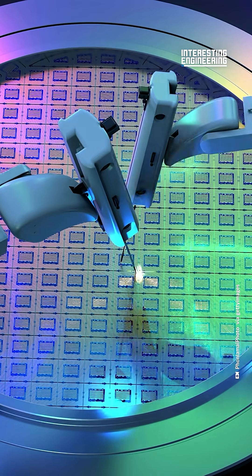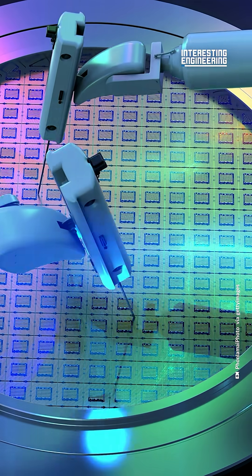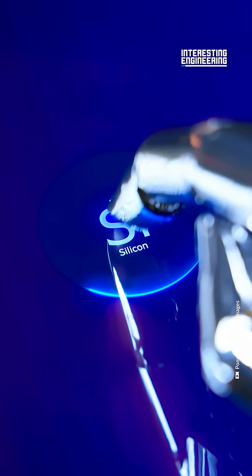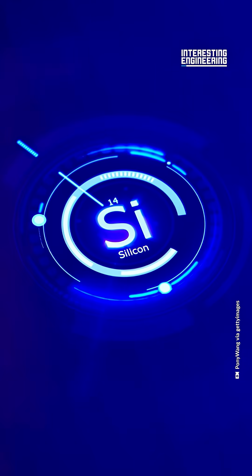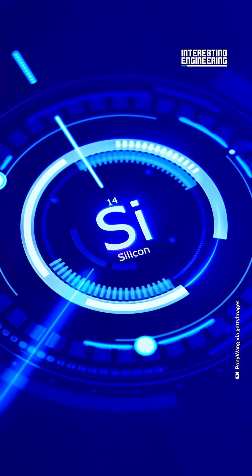Not a single piece of technology would work without this chemical element. Meet silicon. It's used in construction, medicine, kitchenware, automobiles, hygiene, and of course, electronics.